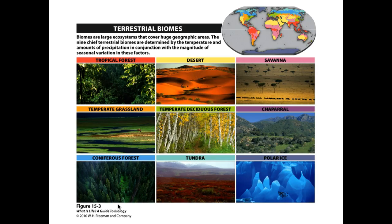There are nine primary terrestrial biomes — all biomes of the land. If you look at the map in the top right, each one is particular to generally one or two different latitudes. Polar ice is exclusively at the poles, which makes a lot of sense. Tundra you don't get much of in the southern hemisphere, but in the northern hemisphere it's only at very low latitudes just below the pole.